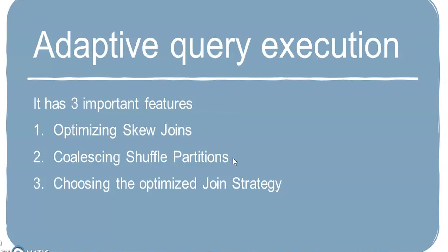By default, shuffle partitions are 200, but you might need to tune them to 100, 20, or whatever number is appropriate for your data. Previously, a developer had to manually choose the right value, but Spark now provides this automatically as part of the new release. The third feature is optimizing join strategy — whether to use a sort merge join or a broadcast join — all covered under Adaptive Query Execution.